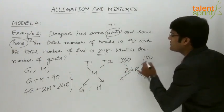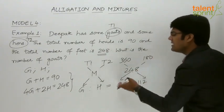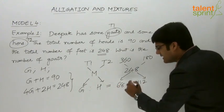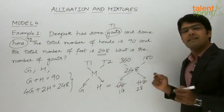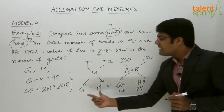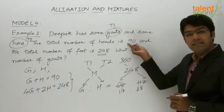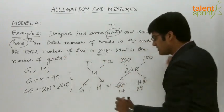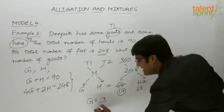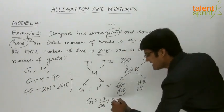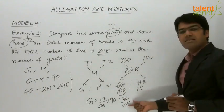Taking the cross differences: 248 minus 180 is 68, and 360 minus 248 is 112. So g to h equals 68 to 112, which simplifies to 17 to 28 (since 4 × 17 = 68 and 4 × 28 = 112). The number of goats is 17 parts out of total 17 plus 28 equals 45 parts. So g equals 17 by 45 into 90, giving g equals 34.